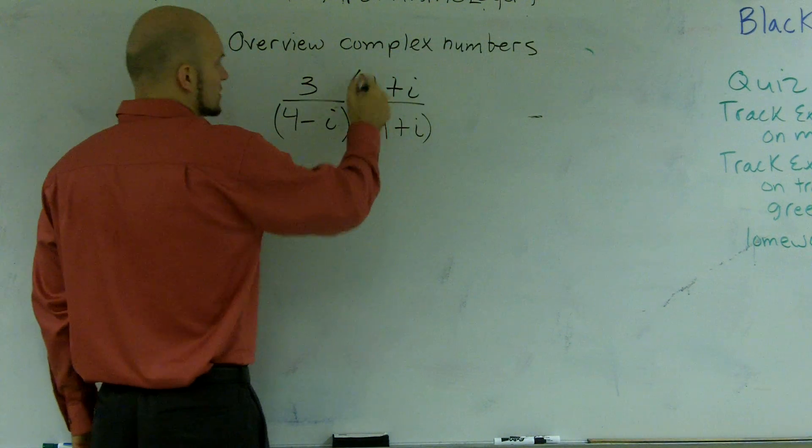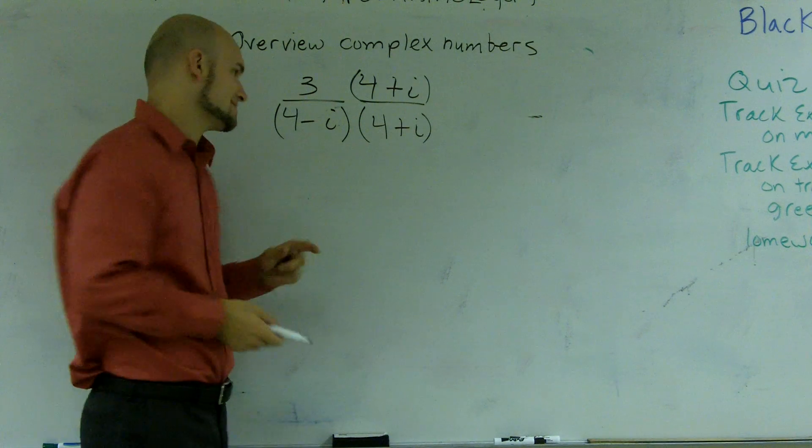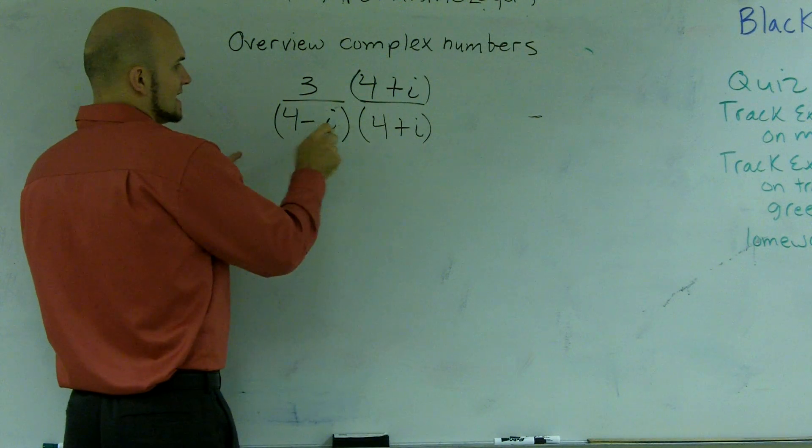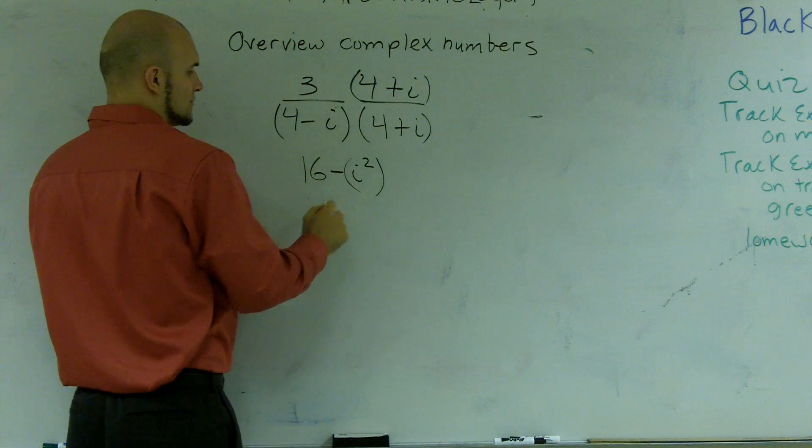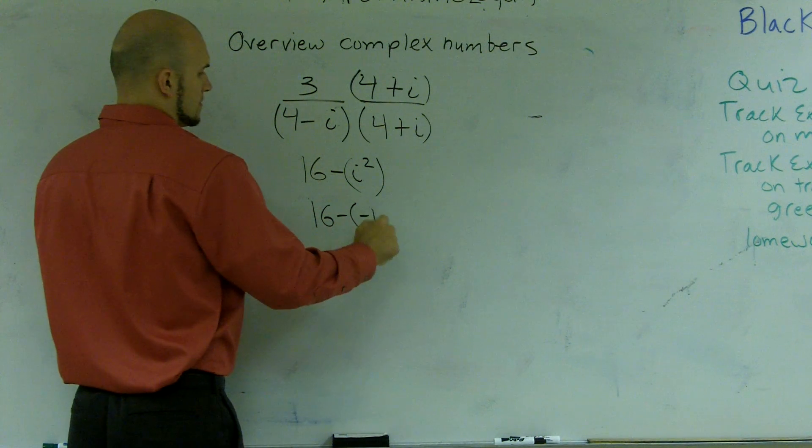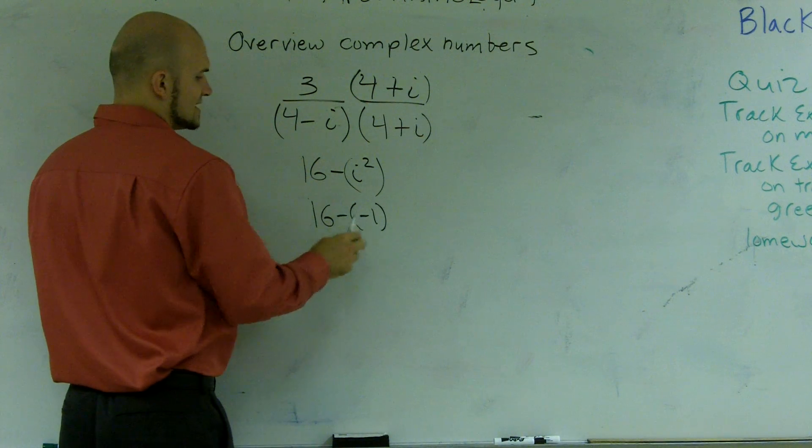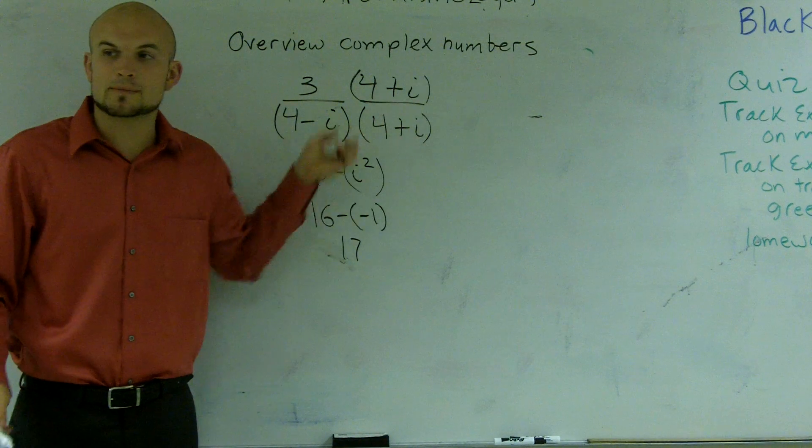I'm not going to work this whole problem, but this is a difference in two squares, meaning my middle terms are going to cancel out. 4 times 4 is 16. Negative i times negative i is a negative i squared. i squared is negative 1. 16 minus negative 1 is 17. So therefore, I've just eliminated my i on my bottom.